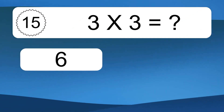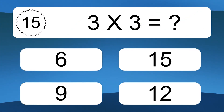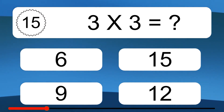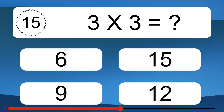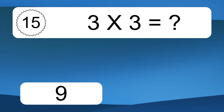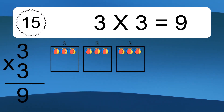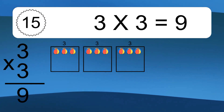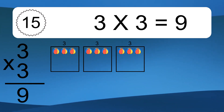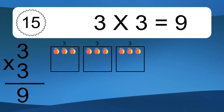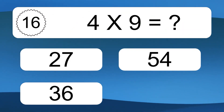3 times 3 equals what? 3 times 3 equals 9. We have 3 boxes, and each box has 3 colorful balls inside. If you count all the balls in all the boxes together, you will have 3 times 3 balls. This equals 9 balls.